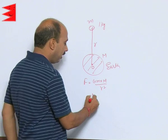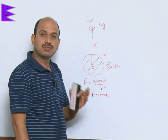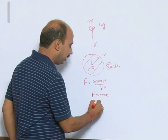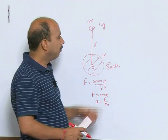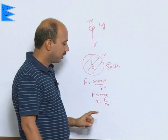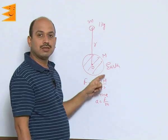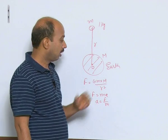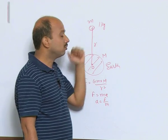We can write F is equal to m into a. Which law is this? Newton's second law of motion. We can write a is equal to F upon m. In both cases, force is same, masses are different. Out of these two, which one has greater mass? Earth, obviously. Earth has much more mass as compared to this 1 kg.